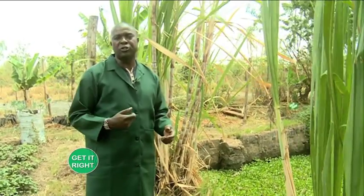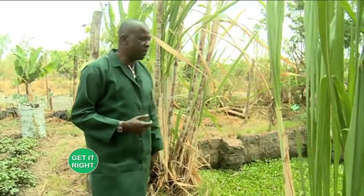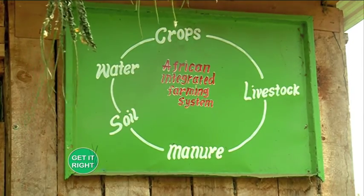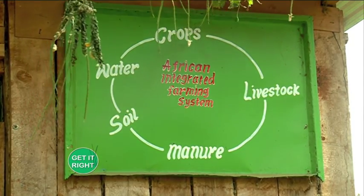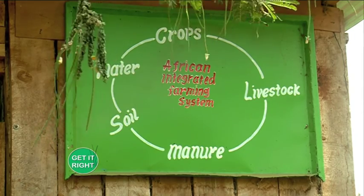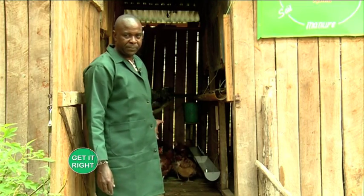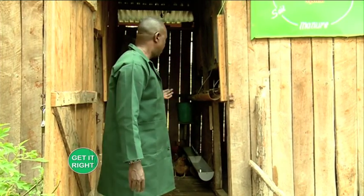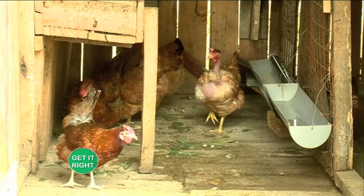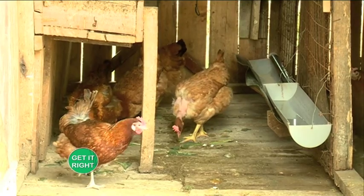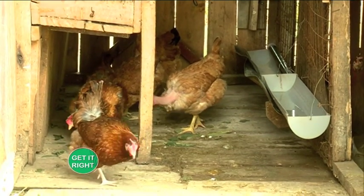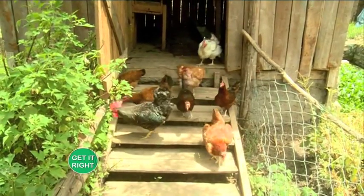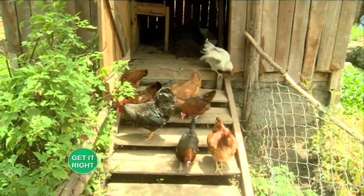These are our fish ponds. We are calling this the African Integrated Farming System, because we have small livestock here. The chickens drop manure into the fish pond, and then the manure produces worms that are eaten by the fish.